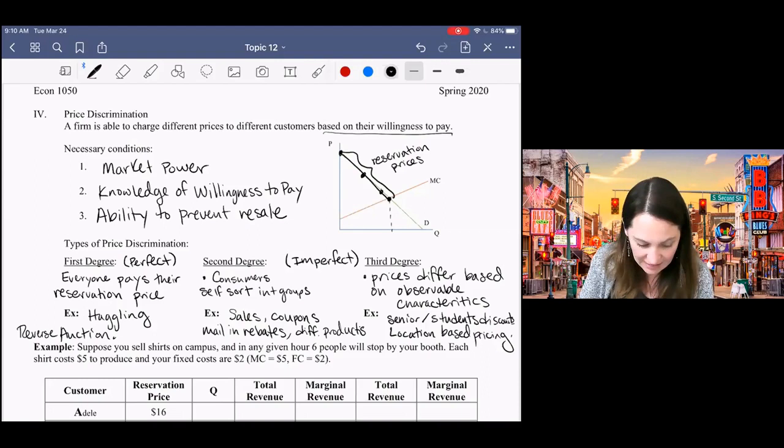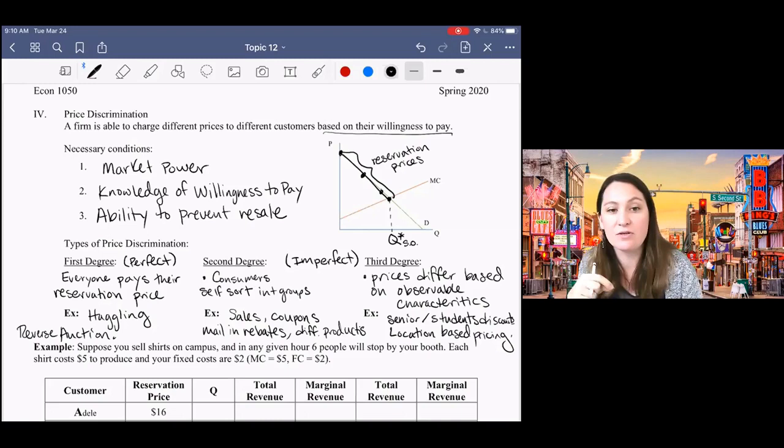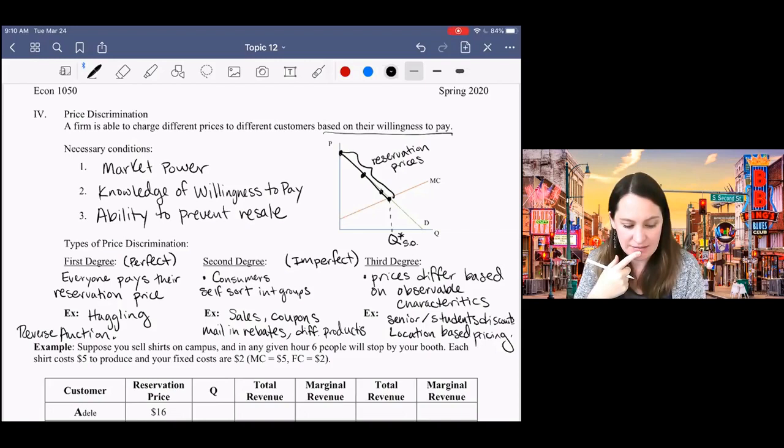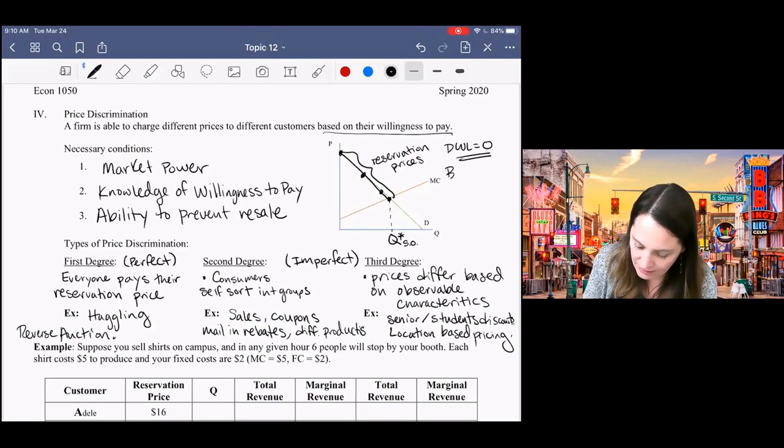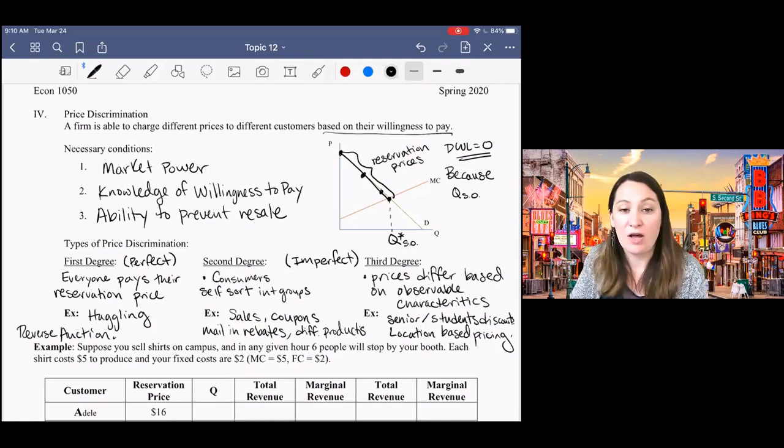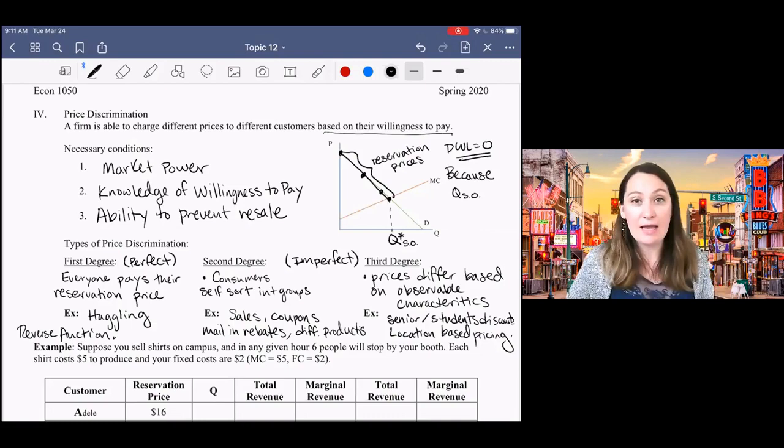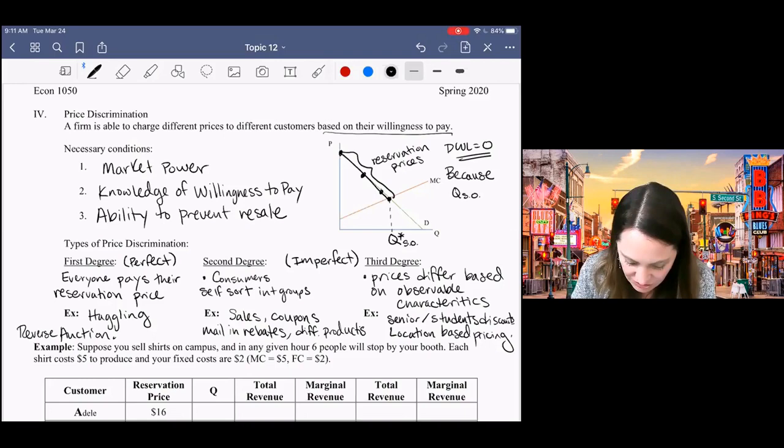That means that I end up here at the socially optimal quantity. Same as competition, supply equals demand, price equals marginal cost, because I'm able to charge every consumer their reservation price. So deadweight loss in this situation is equal to zero because I'm producing the socially optimal quantity by charging people their reservation prices and producing as long as that reservation price, that willingness to pay, is higher than my cost of production.